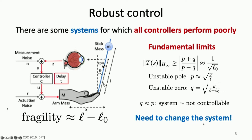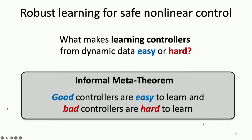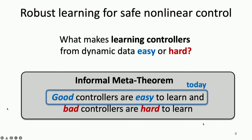So what we've been working towards is a complementary or equivalent theory in the context of learning for control. We're trying to answer: what makes learning controllers from dynamic data easy or hard? The informal meta-theorem we've been converging towards is that if you're actually trying to find a good controller that leads to good performance, it should be easy to find. Conversely, bad controllers — where my optimal controller still sucks — are going to be hard to find. I only have about seven minutes left, so we're going to focus on this idea that good controllers are easy to learn in the context of nonlinear systems.